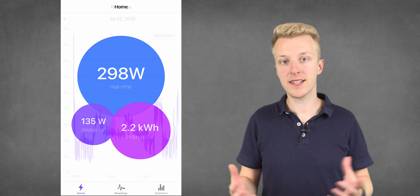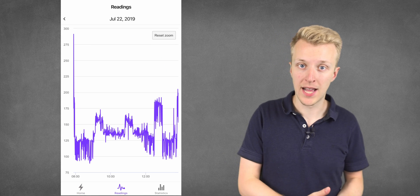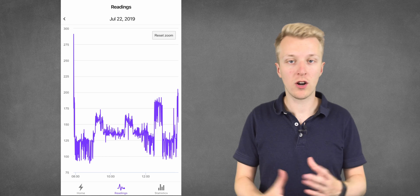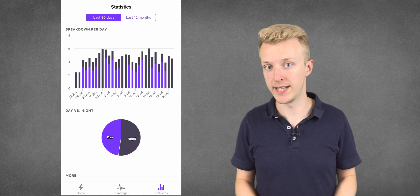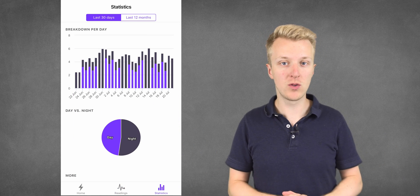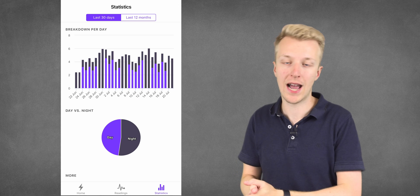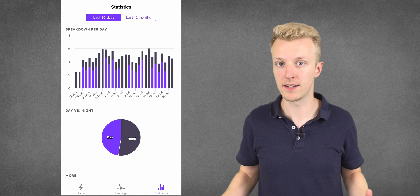On the second tab, I can see the raw readings over time, and the final screen shows us our consumption over the last 30 days. We are currently using between 4 and 6 kWh of electricity every day. Cool right?